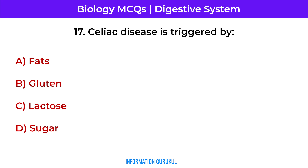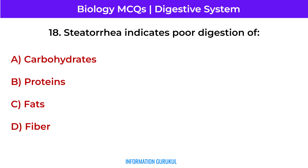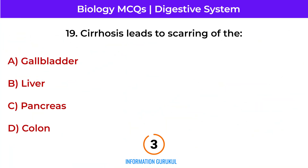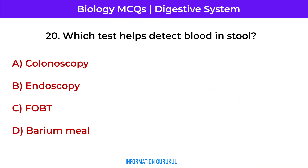Celiac disease is triggered by gluten. Steatorrhea indicates poor digestion of fats. Cirrhosis leads to scarring of the liver. Which test helps detect blood in stool? The fecal occult blood test.